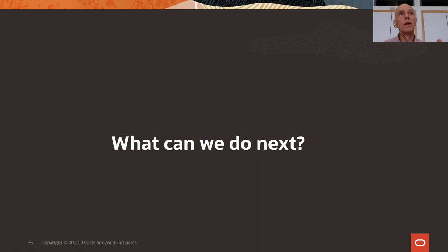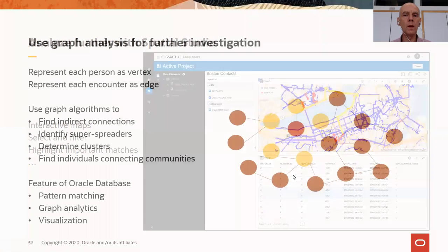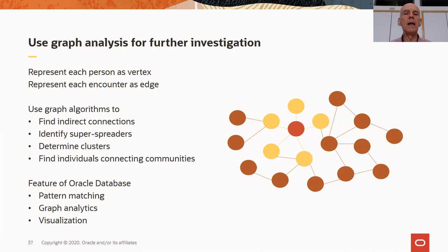What can you do with the results? You can put things onto the map — my recommendation is to start with Spatial Studio to look at things. It's free with the database. That allows you to extract appropriate data sets, highlight specific matches, and so forth. There's also one more thing I briefly want to touch on, which will also be a topic in this afternoon's Groundbreakers sessions: Johnny Cheresa will be talking about graph analytics.